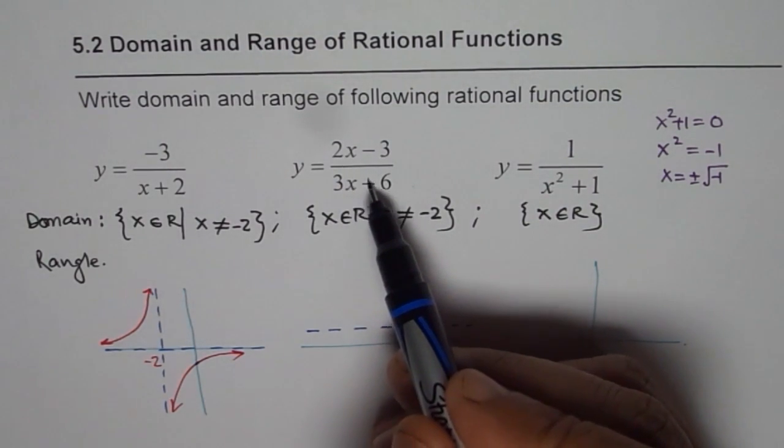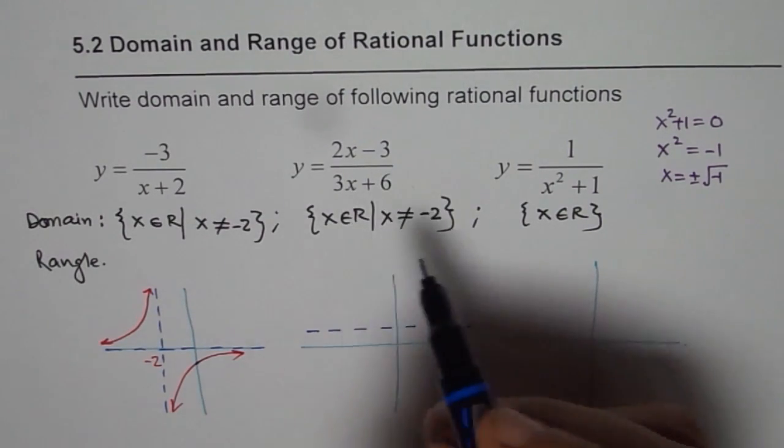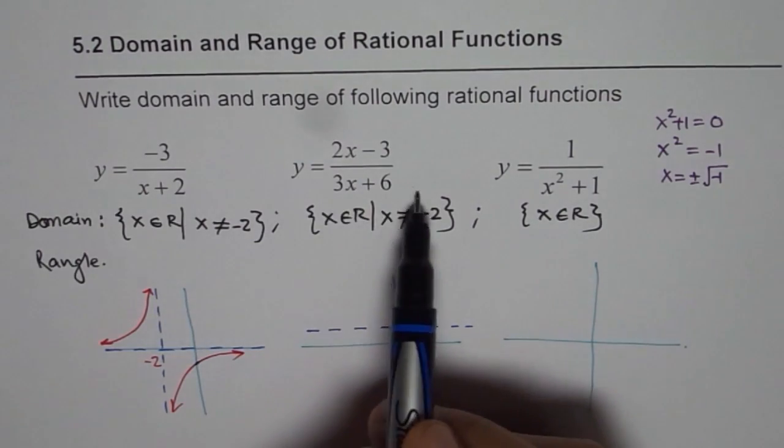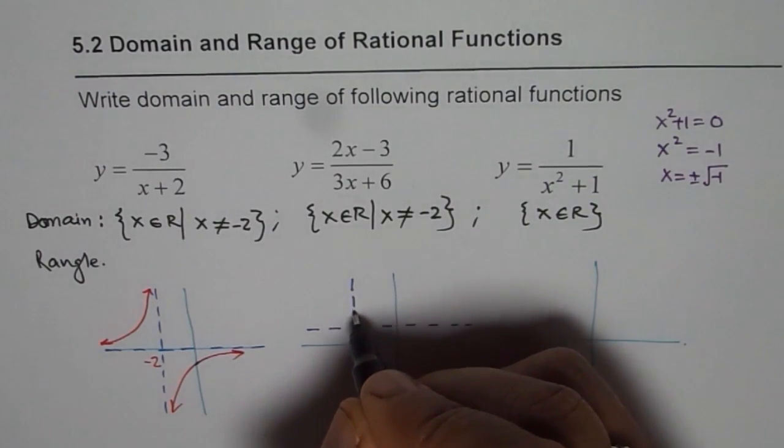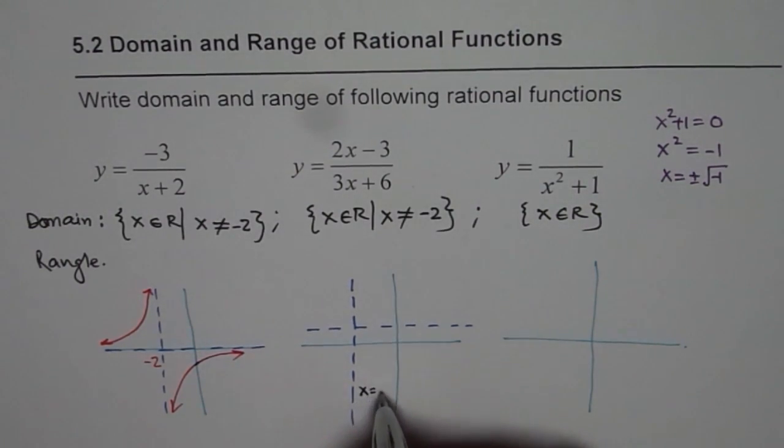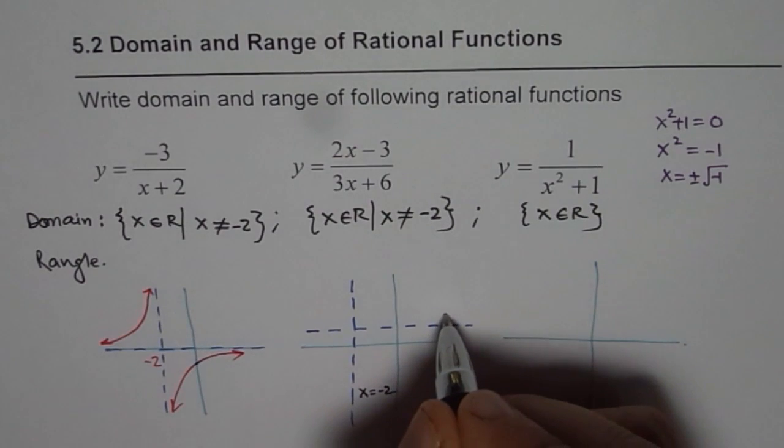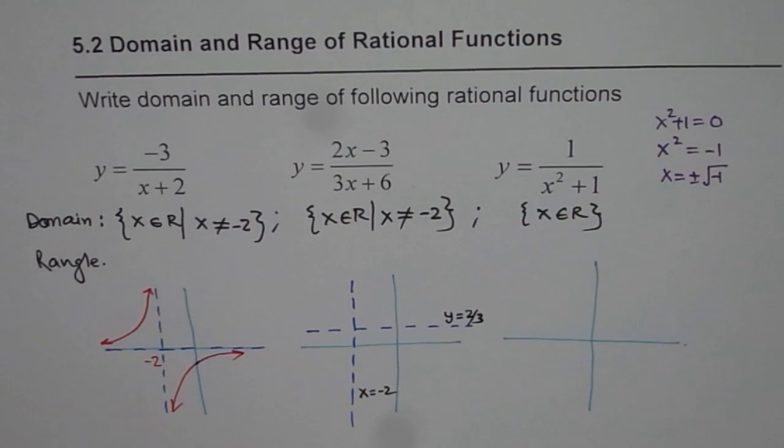And if I write x equals to 0, the vertical asymptote will be at minus 2. So let me draw this minus 2 here, for example. So this is my vertical asymptote, which is x equals to minus 2. And that is y equals to 2 over 3, the horizontal asymptote. Now we will find x and y intercepts.